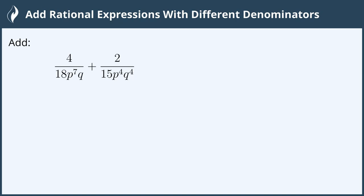Hi everyone! In this video we are going to add rational expressions with different denominators. 4 over 18p to the 7th q plus 2 over 15p to the 4th q to the 4th.